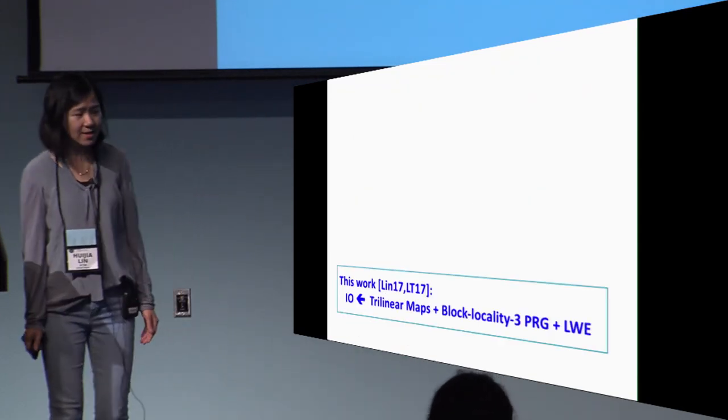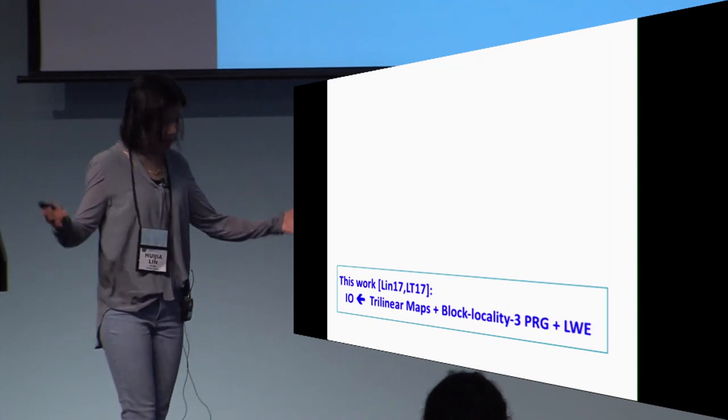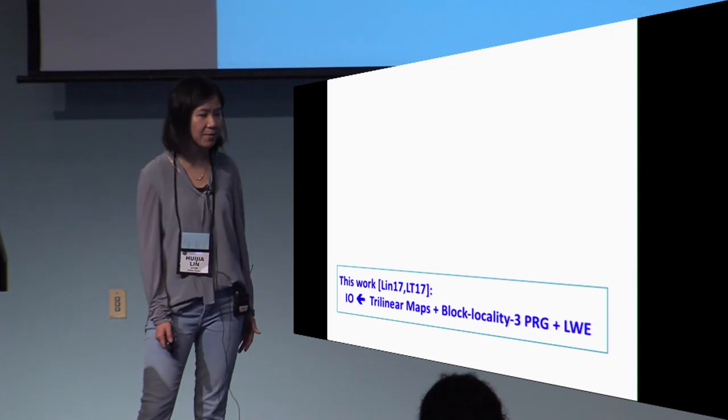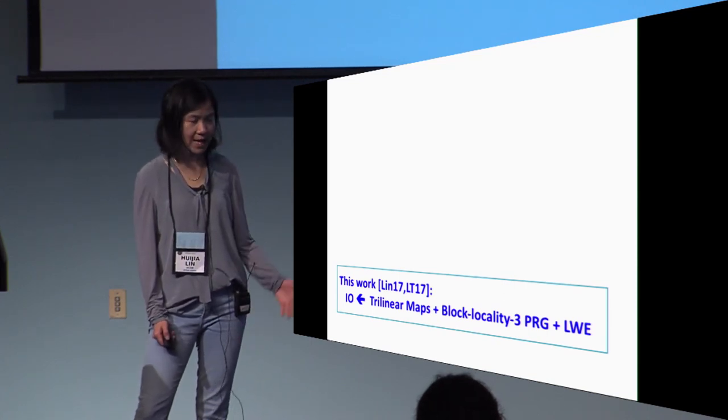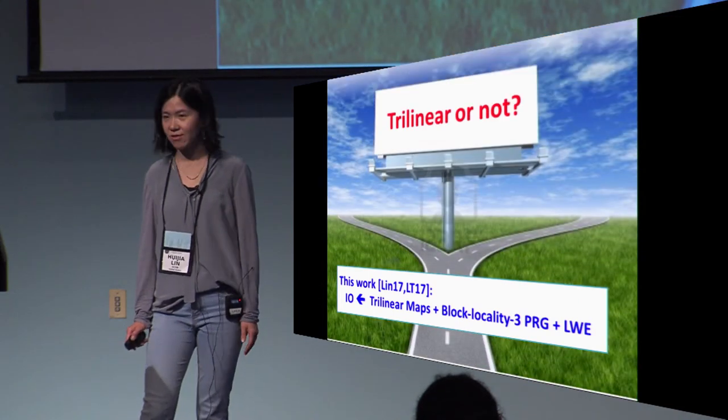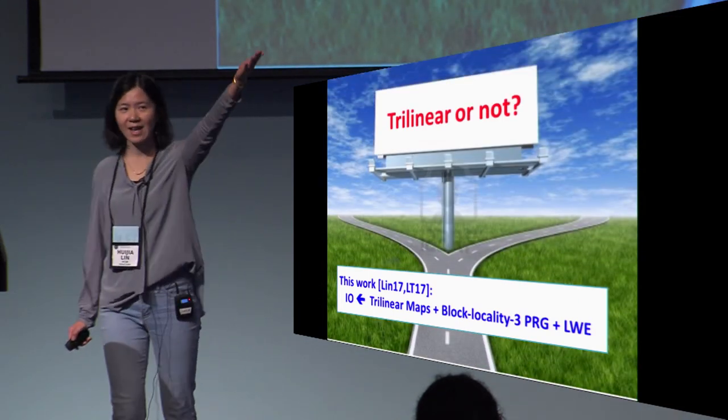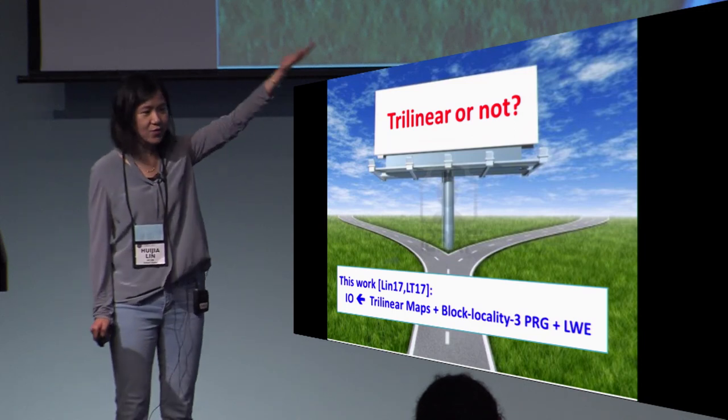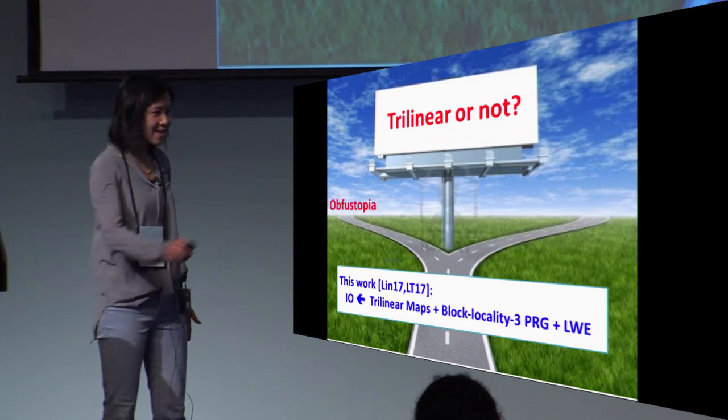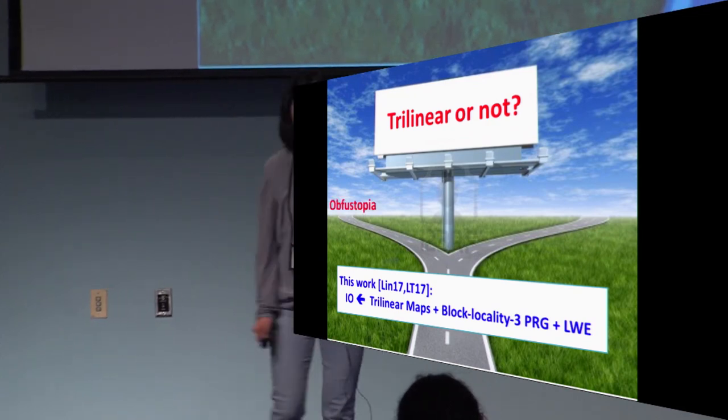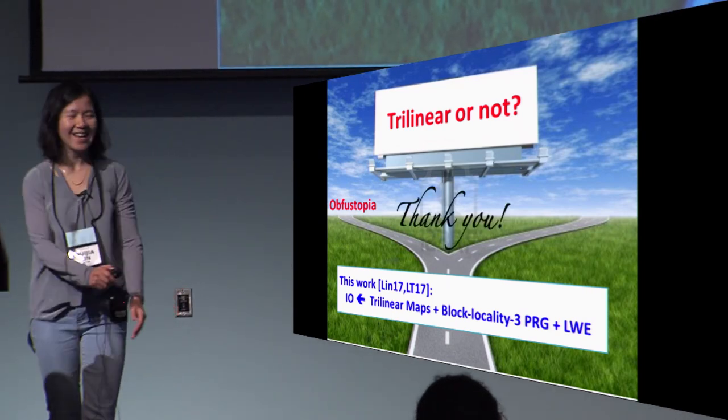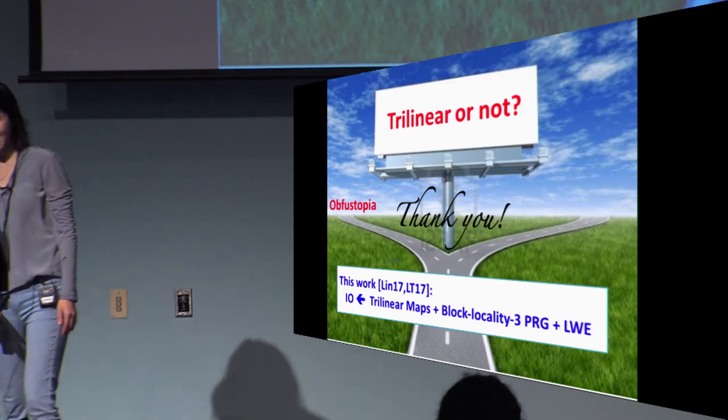Let me summarize. In this work with two papers, the end message is that we can construct IO using trilinear maps and blockwise locality 3 PRG. Now, ahead of us is a very interesting fork with the question hanging above: do there exist trilinear maps or not? If they do exist, then our next destination is obfustopia. If not, then we still live in the promised land. Thank you.